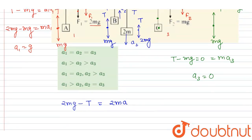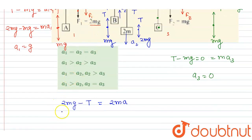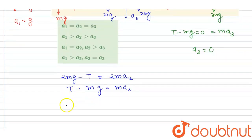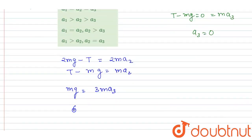And for this B block, I will write T minus mg is equal to m times a2. If you add the two equations, I will write mg is equal to 3m times a2, so a2 will be equal to g by 3.